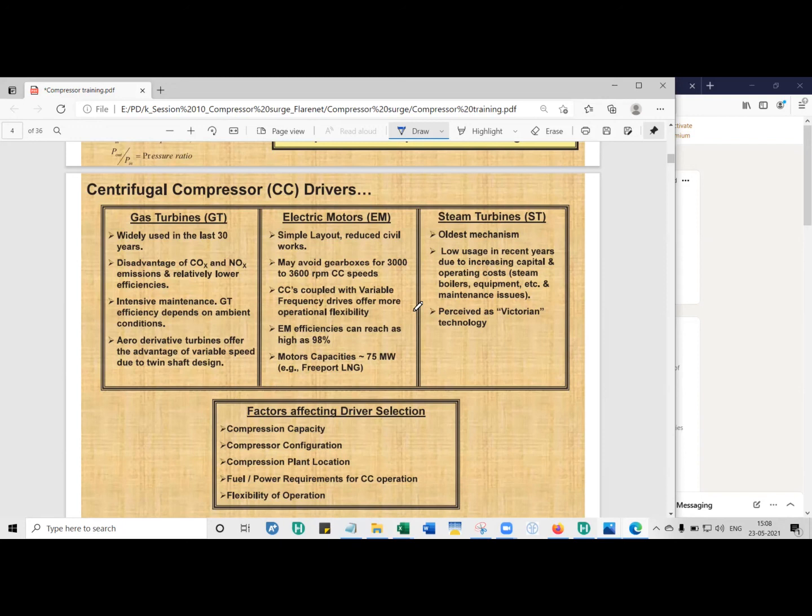GE offers something like LM. They call it LM 6000. It gives about 55 or 56 megawatts of power ISO rating, I think. But I have to check, I'm not sure with these numbers. It's just an example.